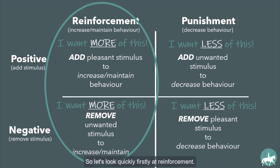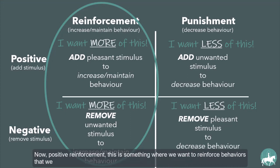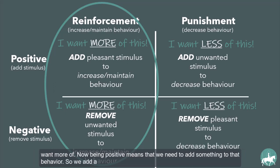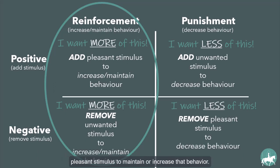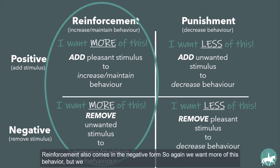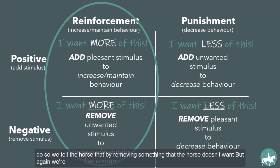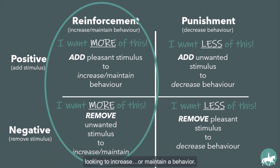Let's look quickly at reinforcement. Positive reinforcement is something we use to reinforce behaviors we want more of. Being positive means we need to add something to that behavior — we add a pleasant stimulus to maintain or increase that behavior. Negative reinforcement also aims to get more of a behavior, but we tell the horse that by removing something the horse doesn't want. Again, we're looking to increase or maintain a behavior.